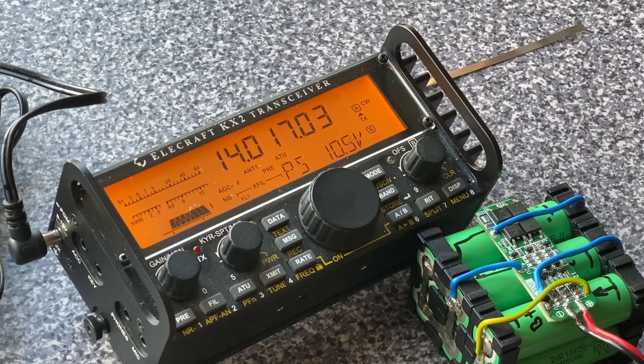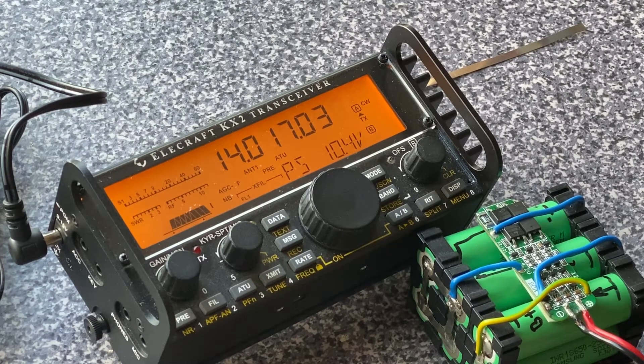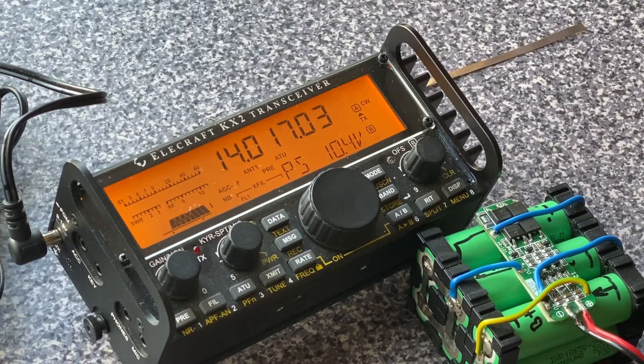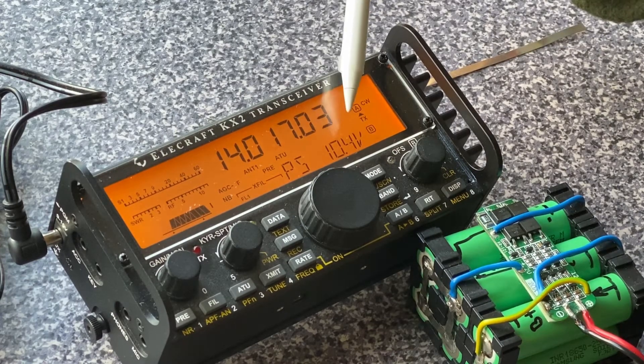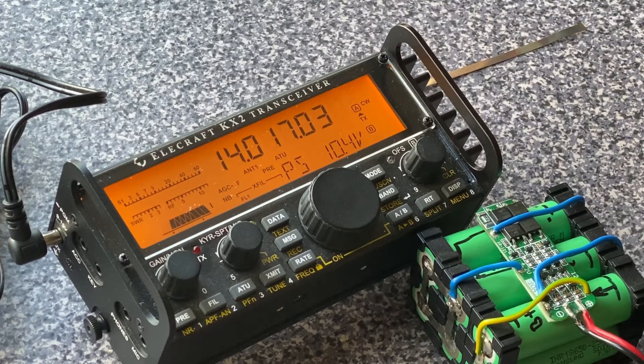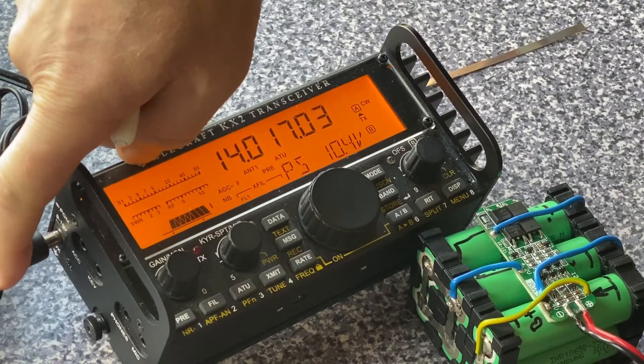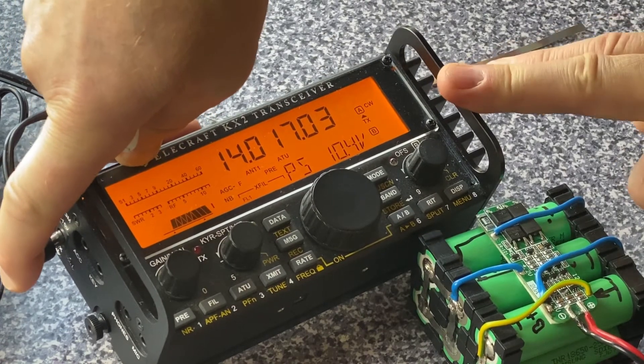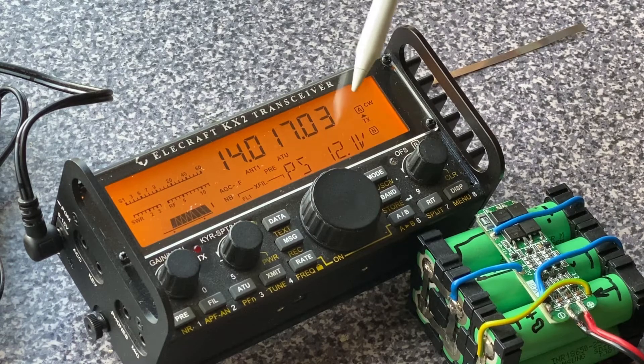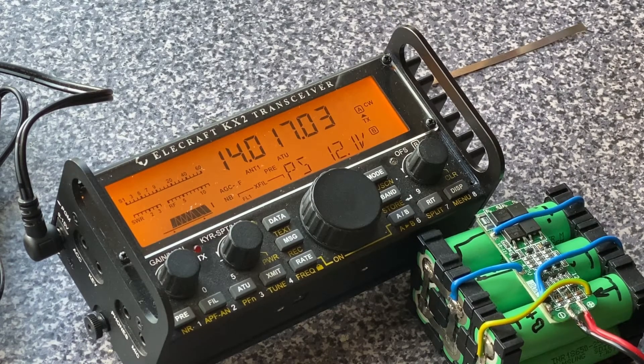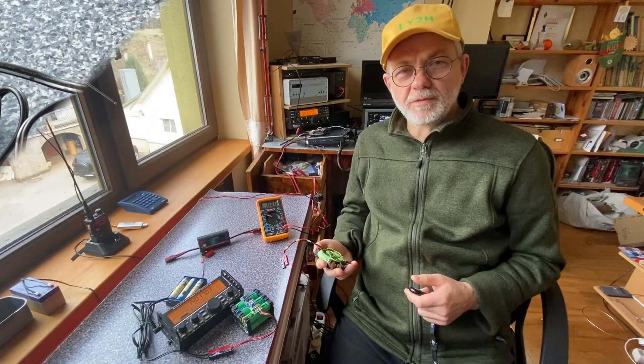And in the end let's see how the battery pack is working with my Elecraft KX2 transceiver. So at the moment the transceiver runs off its internal 10.4 volts battery and now we connect our ready just made battery pack. And voila! It shows 12.1 volts. It's working, it's ready and it's ready to go. So that's it for today.